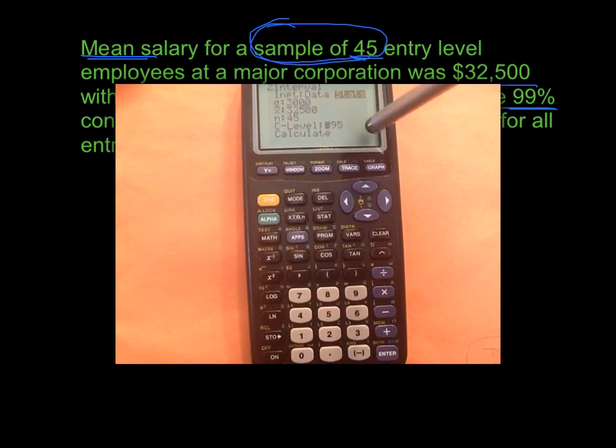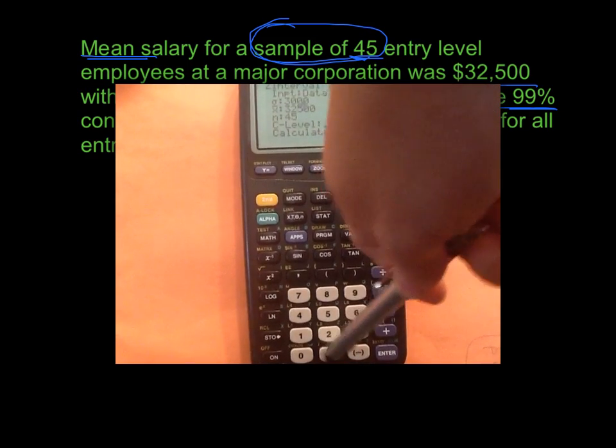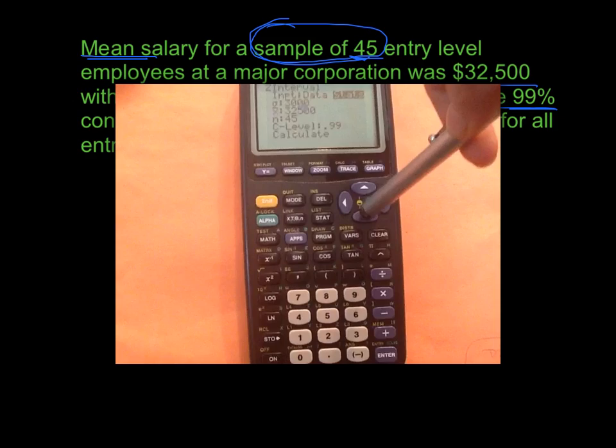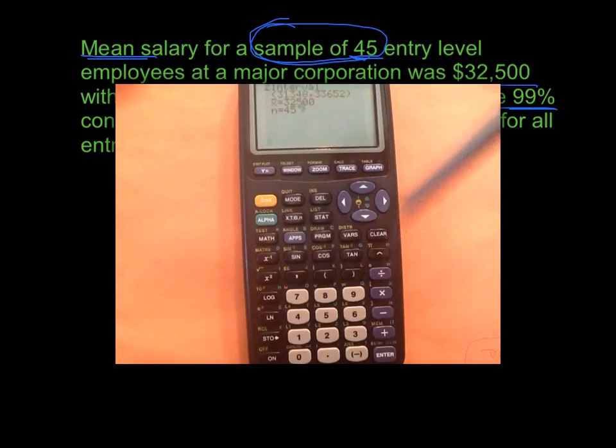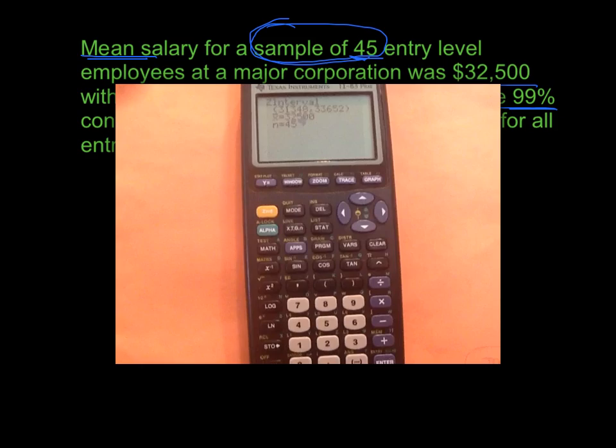Again, we wanted a 99% confidence interval. So I have to do 0.99. Hit calculate and enter. And that one didn't take much time at all. So it came right out.